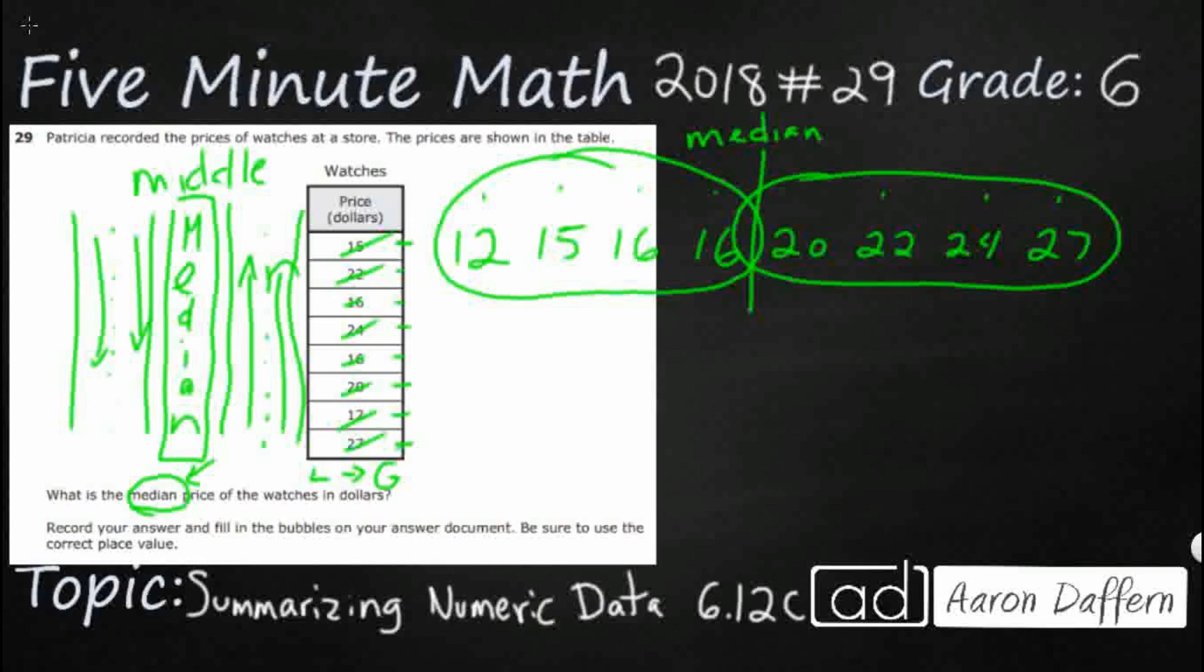If you ever get a data set that's odd, then you will actually get one number sitting right in the middle. But this data set is split evenly with 4 on either side of our midpoint. So we actually need to see what is the midpoint between this 16 and this 20.